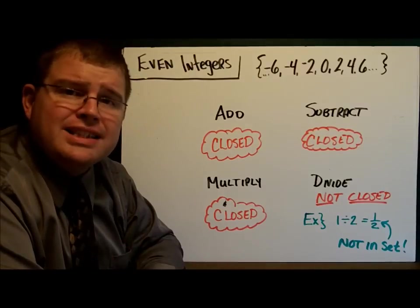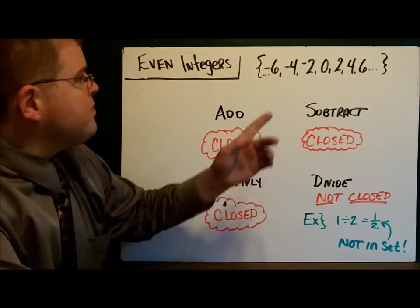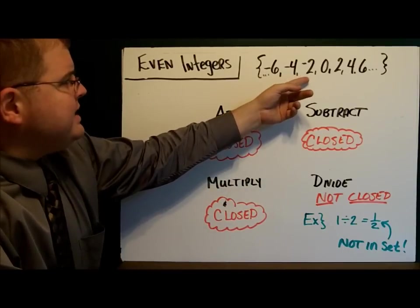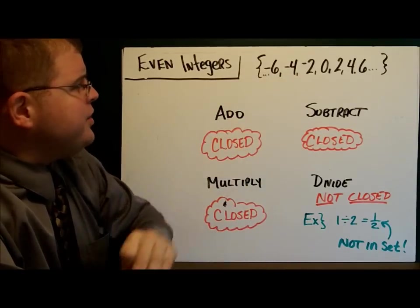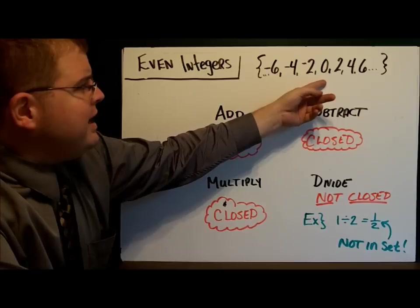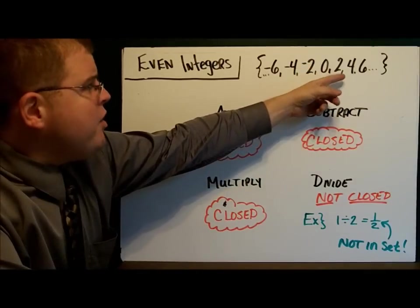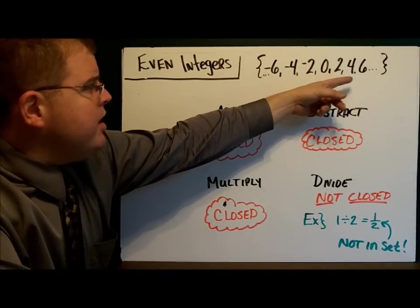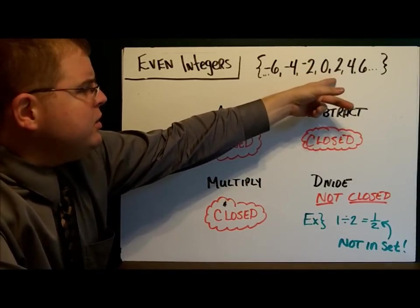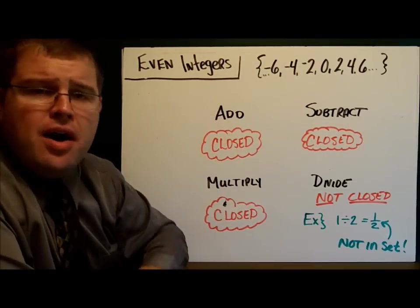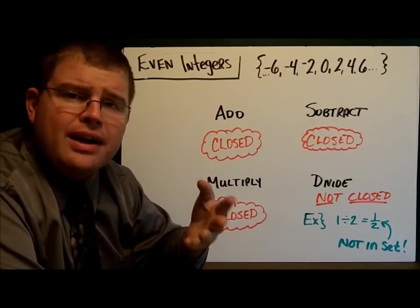Let's try subtraction. Let's see if we can figure one out there. Negative 4 minus negative 2. That's negative 2. It's there. 2 minus 0 is 2. 4 minus 4, 0. 6 minus 4, 2. It looks like they're always in there. It looks like I win another round.